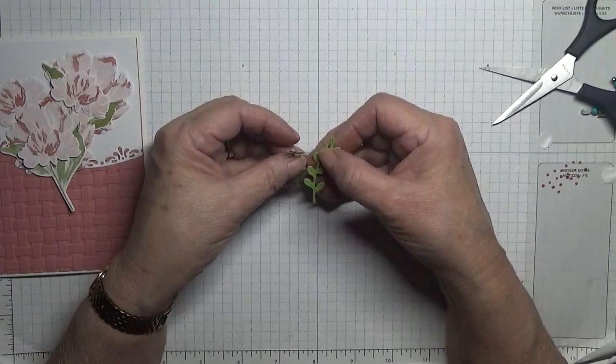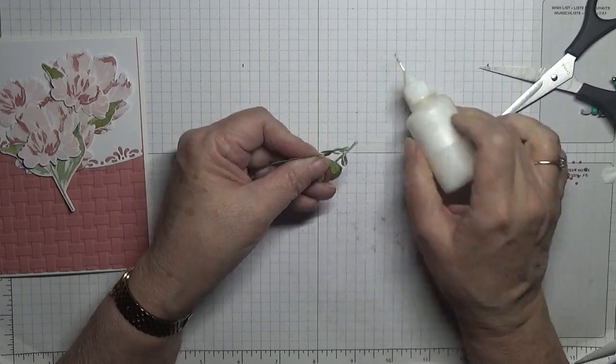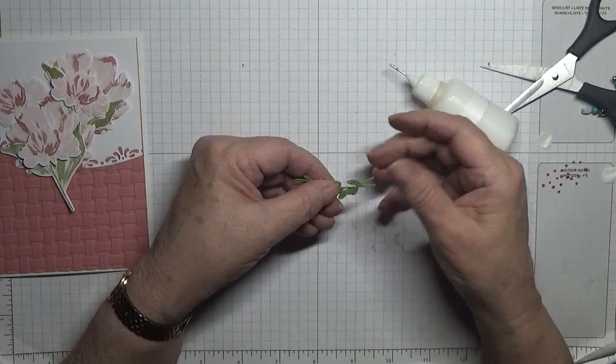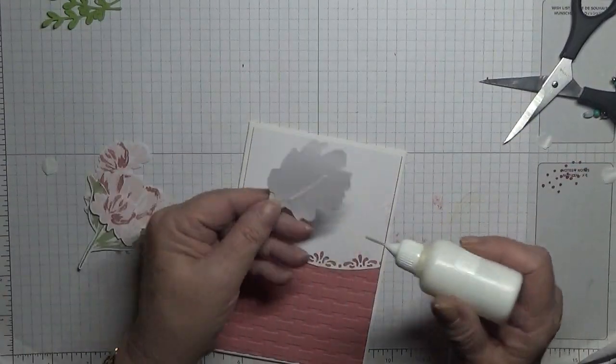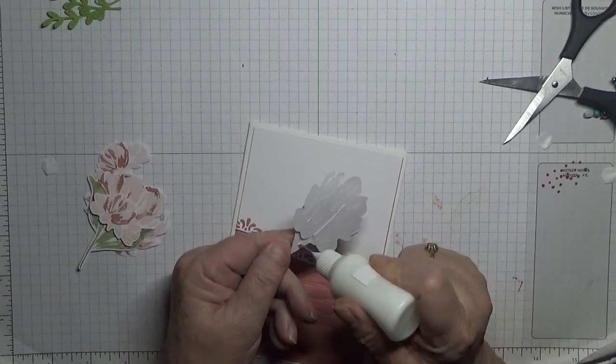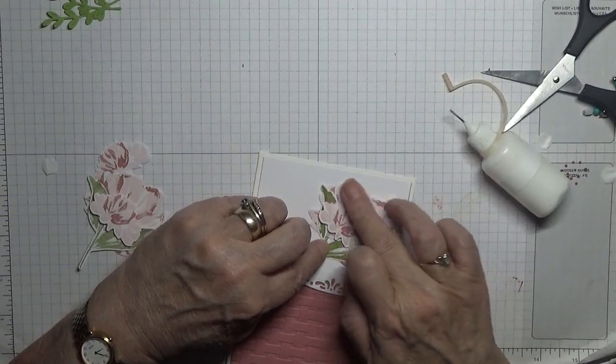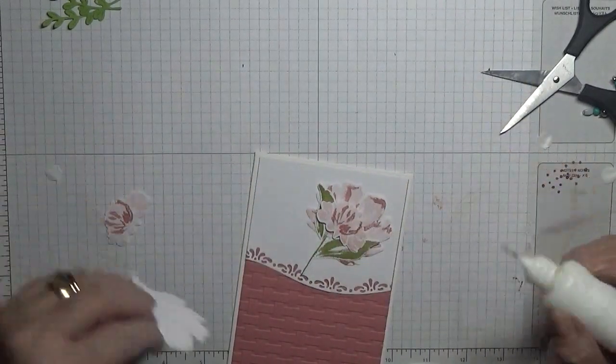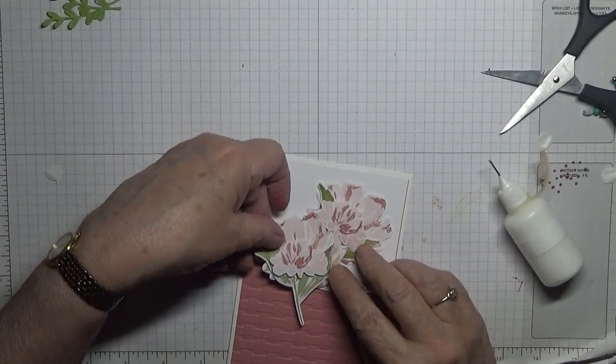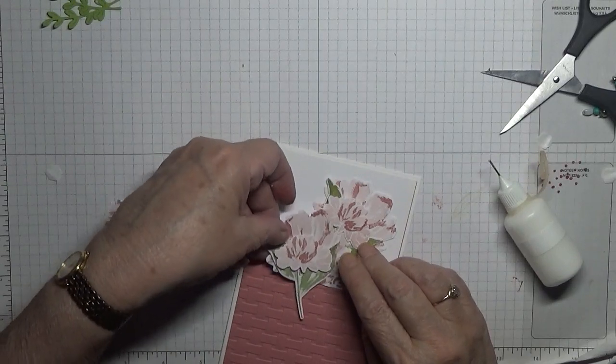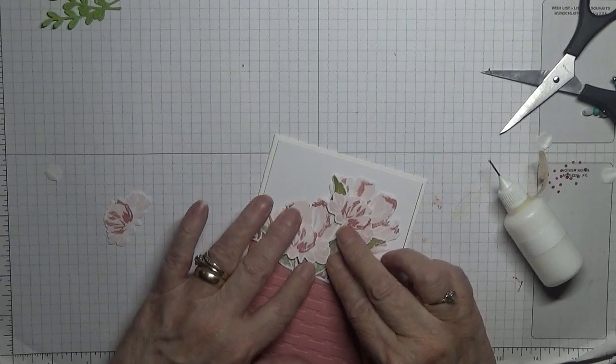These I just glue together at the bottom like that, and they will sit behind the flower. So let's glue these down. And that I placed just there. And this one under that one a bit, like that there.